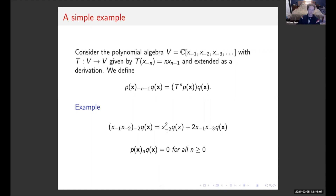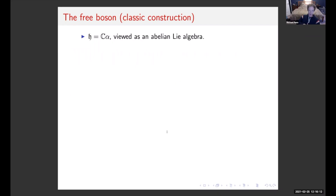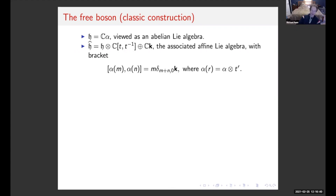Next, maybe the simplest non-commutative example is the Heisenberg vertex algebra — the algebra of one free boson. Let's look at the classic construction. Consider a one-dimensional vector space with basis vector α, viewed as an abelian Lie algebra with trivial bracket. We form the associated affine Lie algebra Ĥ: H tensored with Laurent polynomials plus a central element K. The bracket between elements is: [αₘ, αₙ] = m·δₘ₊ₙ,₀·K, where K is central.